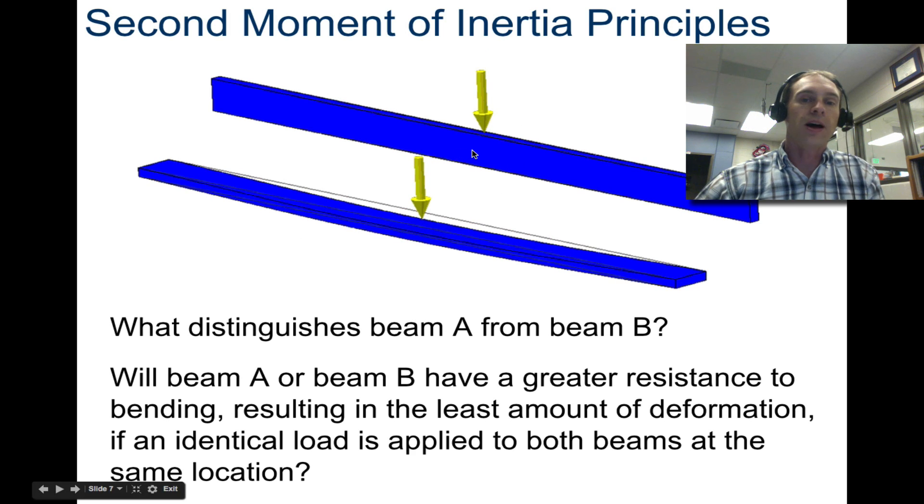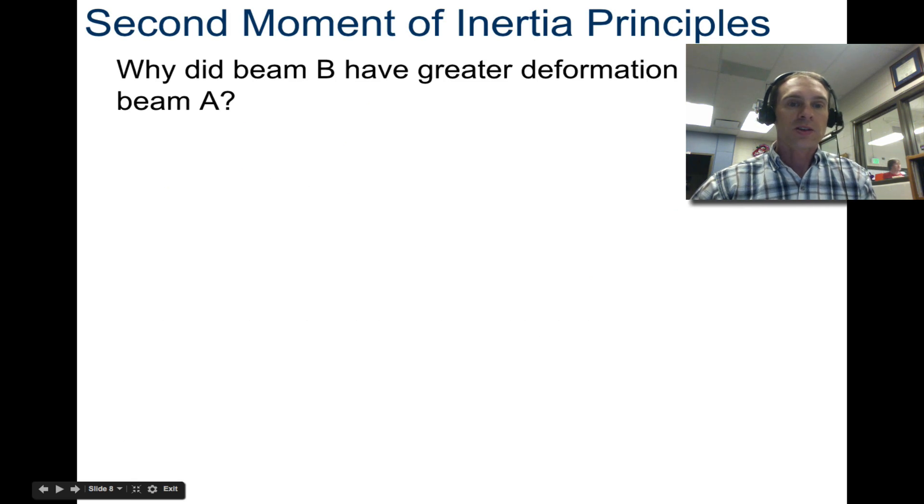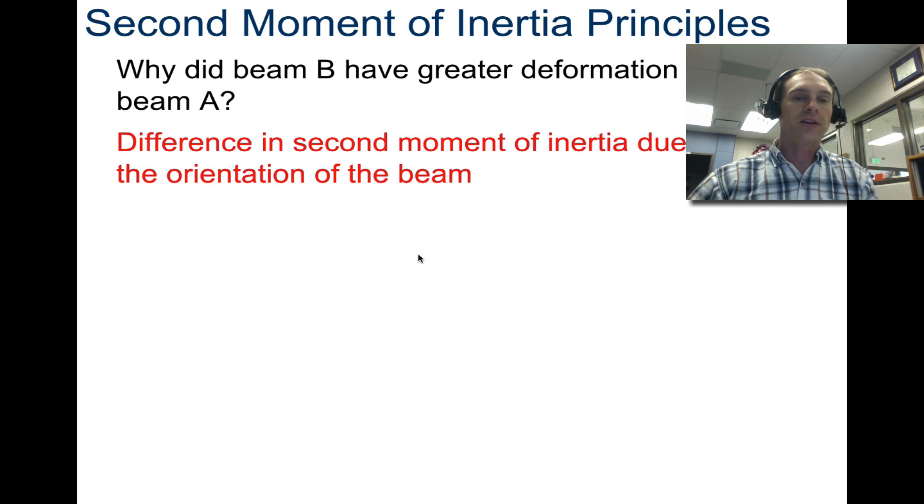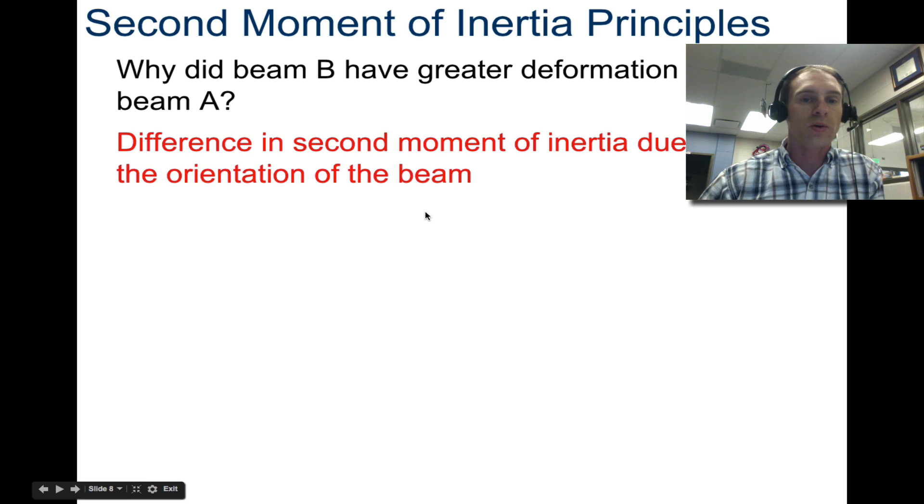Take a look at this under Inventor. You can see that the deformation with the same load is almost nothing when it's vertical. It's a lot when it's horizontal. So let's calculate that. Why is that? The difference in second moment of inertia due to the orientation of the beam.